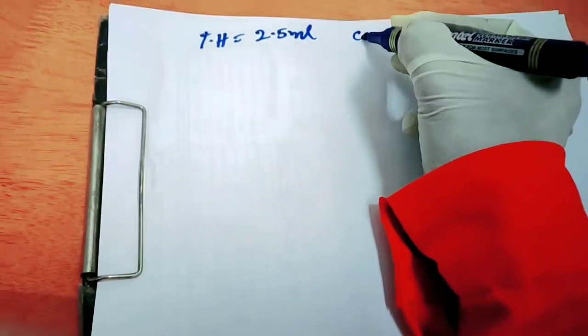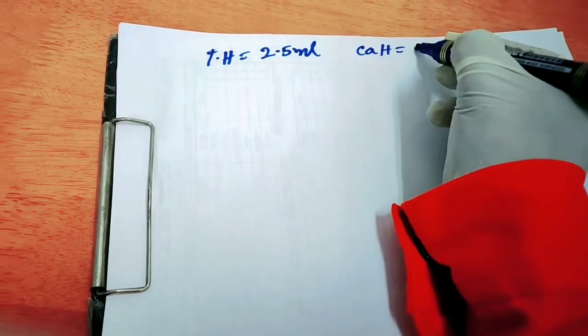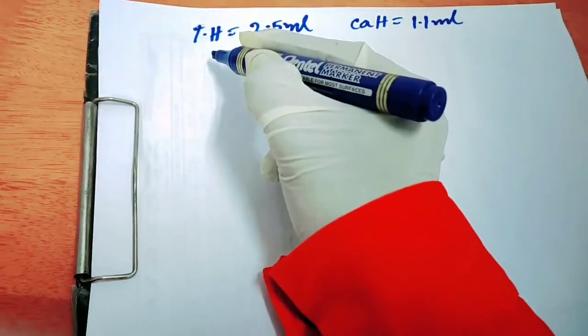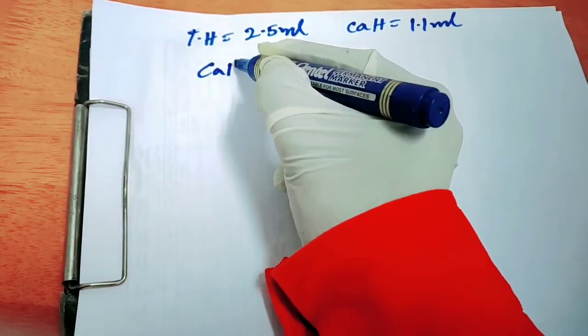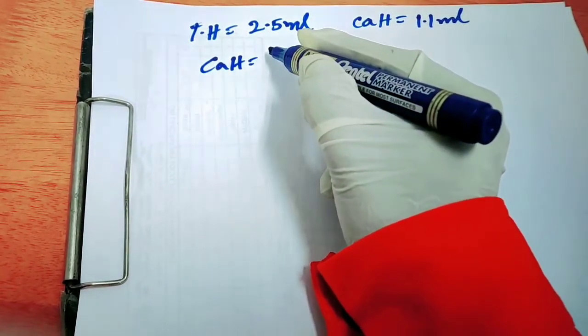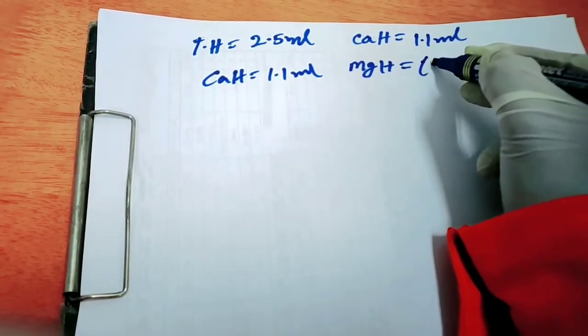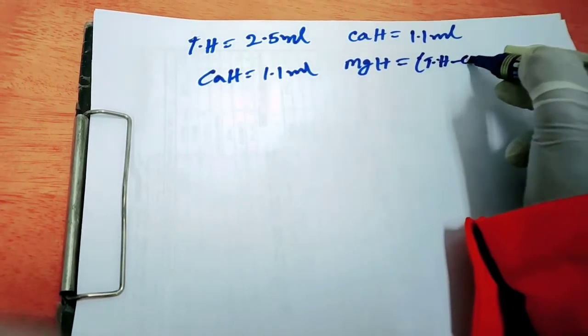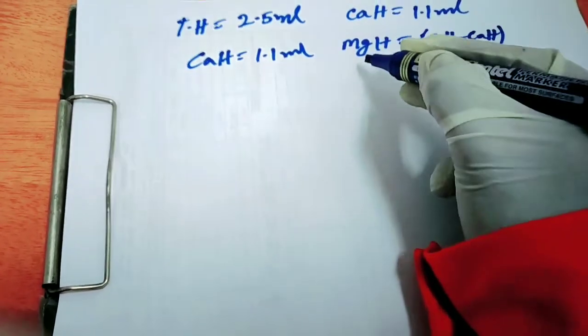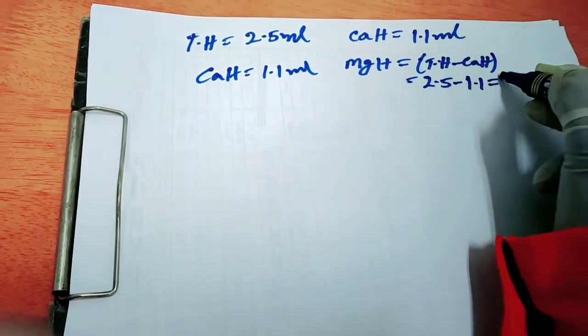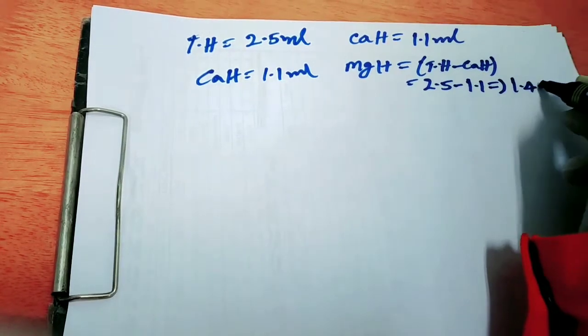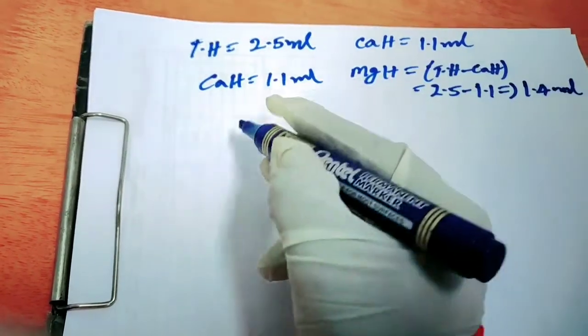Then go for calculation part. Total hardness is equal to 2.5 ml. Calcium hardness is equal to 1.1 ml. So magnesium hardness equals total hardness minus calcium hardness. 2.5 ml minus 1.1 ml equals 1.4 ml. So it is magnesium hardness.